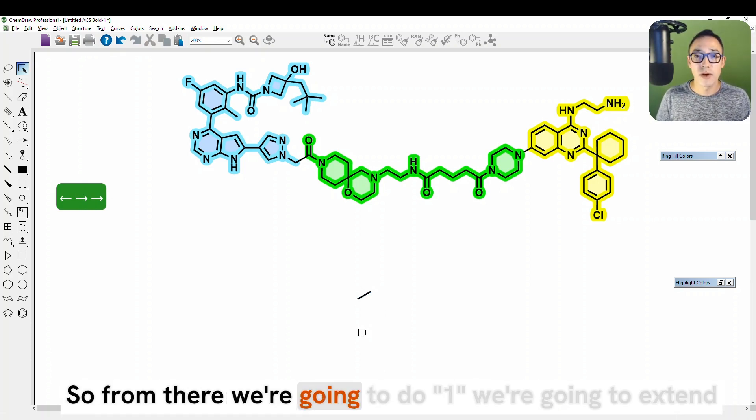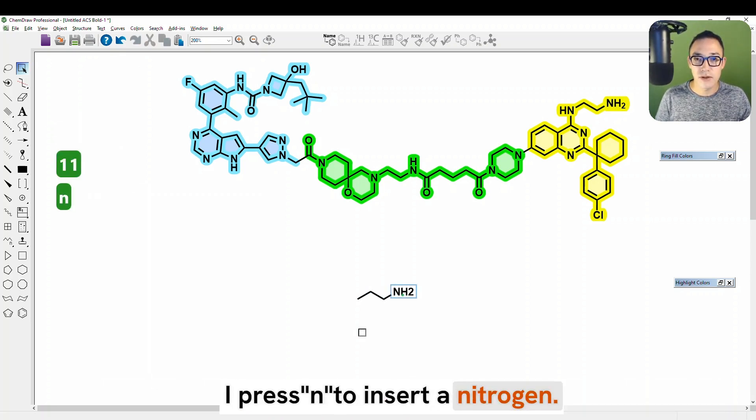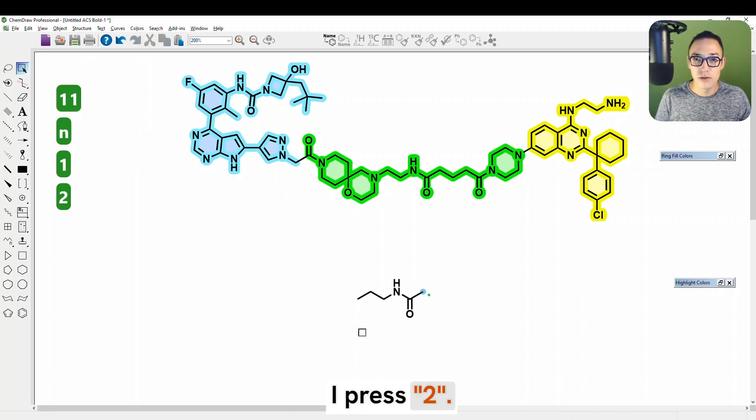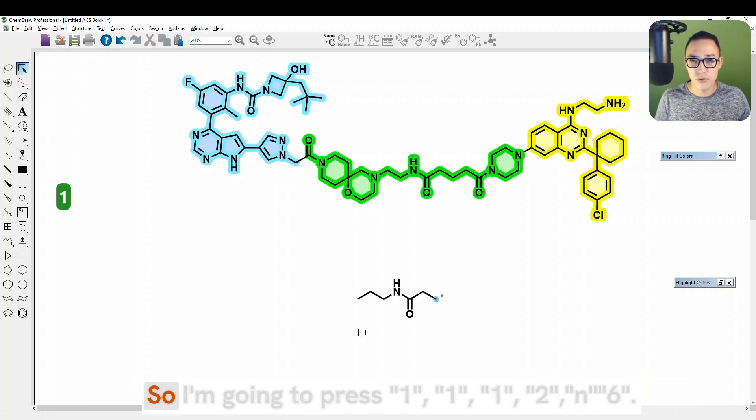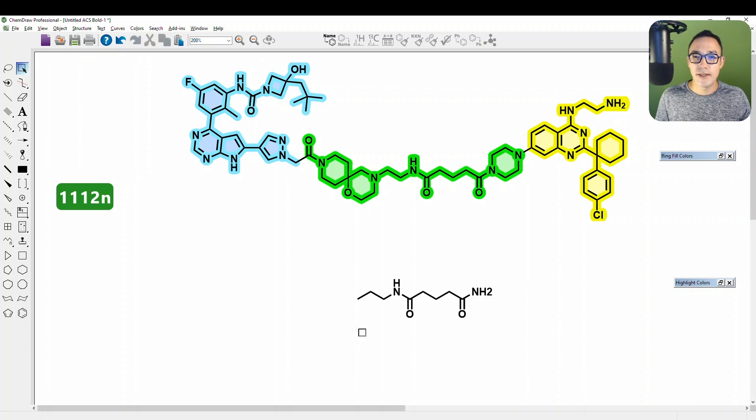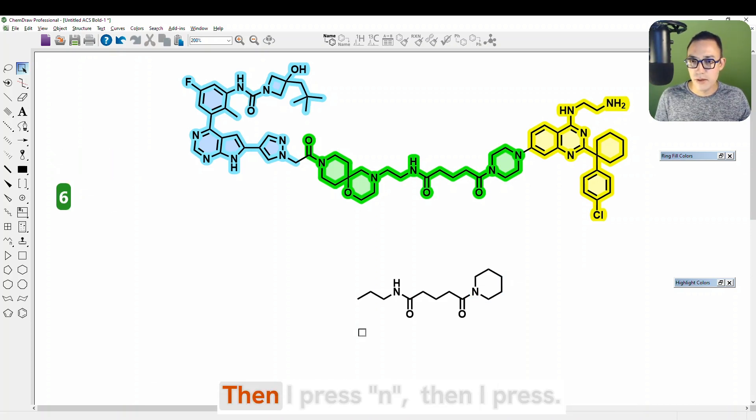Okay, so from there, we're going to do one. We're going to extend the chain that I'm on the right hand side of the molecule. Press one, I press N to insert the nitrogen, I press one, I press two. Two is the hotkey for a carbonyl plus a methyl group. So I'm going to press one, one, one, two, and six. Six over an atom introduces a cyclohexyl.